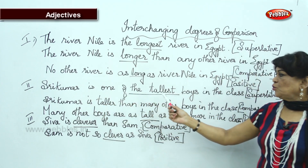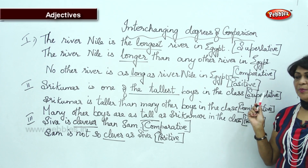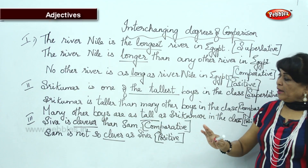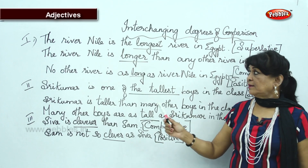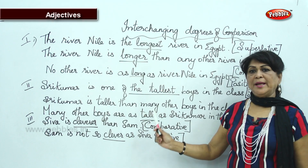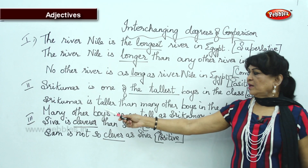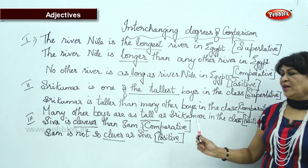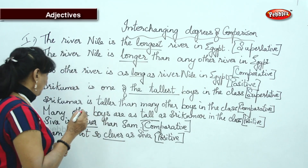'Shrikumar is one of the tallest boys in the class' — tallest is superlative. Comparative: 'Shrikumar is taller than many other boys in the class' — here you should not use 'any other.' For the 'one of the' pattern, you write 'many other boys in the class.' Positive: 'Many other boys are as tall as Shrikumar' — or you can use 'most other boys.'